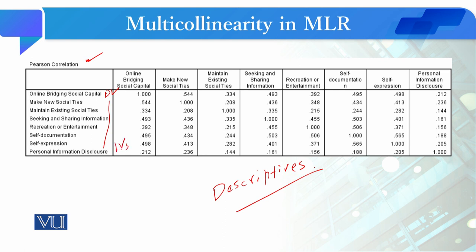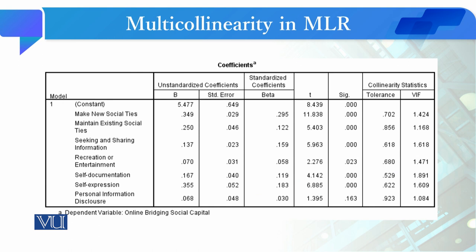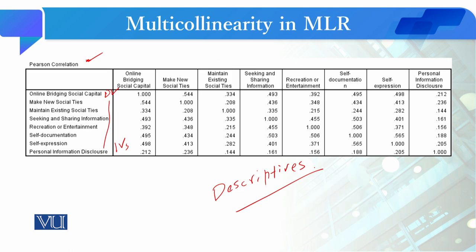The independent variables in this study include: new social ties, maintaining existing social ties, seeking and sharing information, recreation or entertainment, self-documentation, self-expression, and personal information disclosure. Yeh tamam motivations to use social media hain, aur inke motivations se unke online bridging social capital pe kya asar padta hai yeh humne explain karna hai apne multiple linear regression ke model mein.